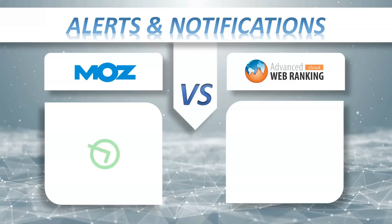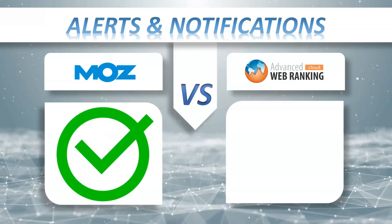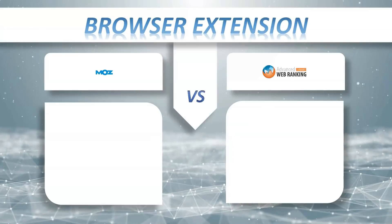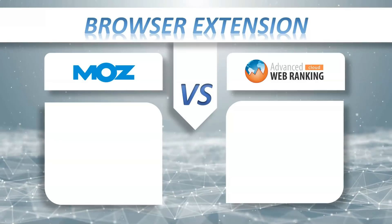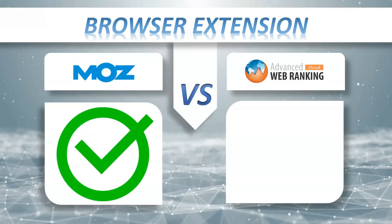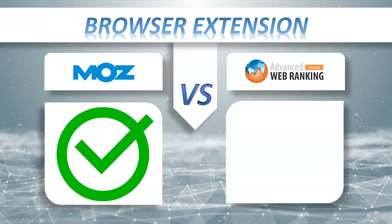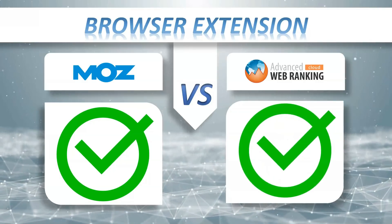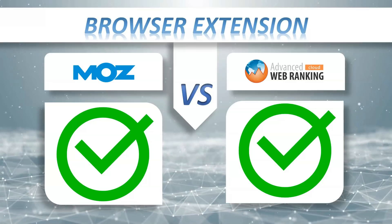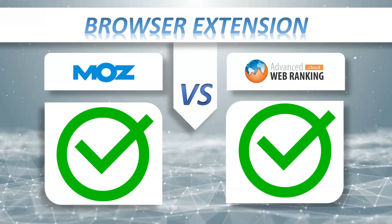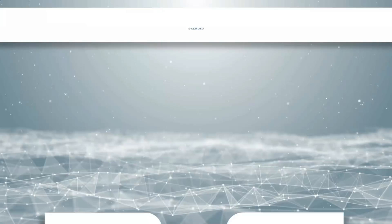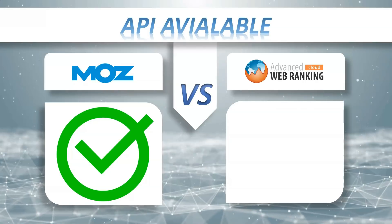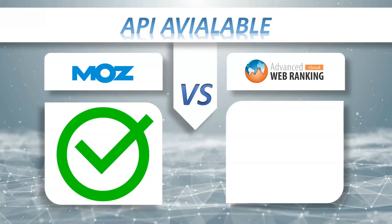Alerts and Notifications: MostPro has them, AWR Cloud also has them. Browser Extension: MostPro plus, AWR Cloud plus. The SEO toolbar lets you get the most important SEO metrics of any website right in your web browser. API Available: MostPro has it, AWR Cloud also has it.